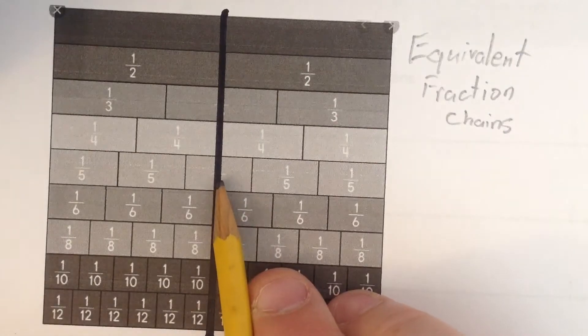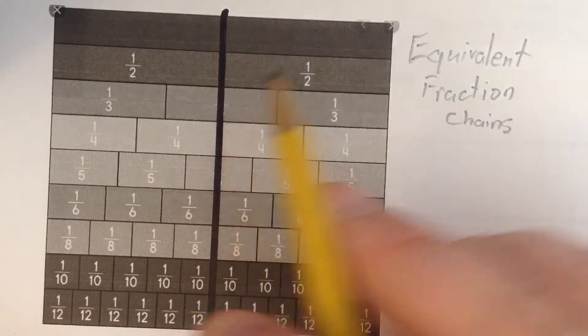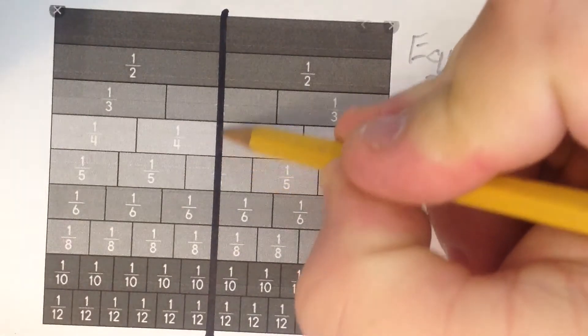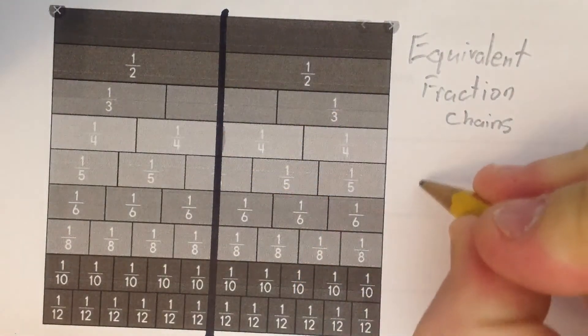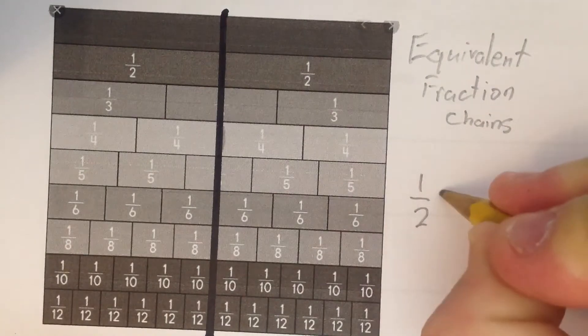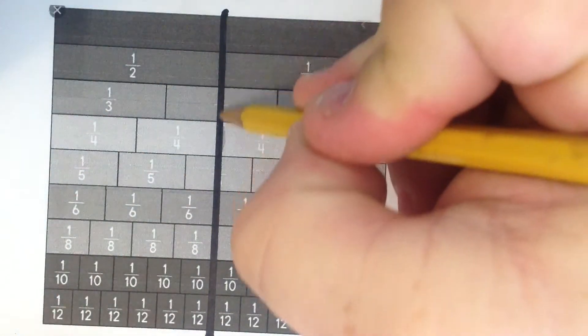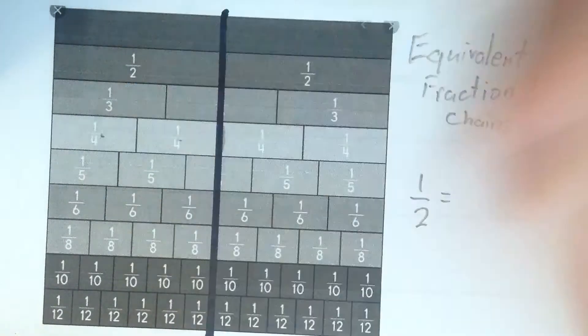And thirds, that doesn't count either, but look, fourths, that ends right where one-half ends. So I can say one-half is the same as two-fourths.